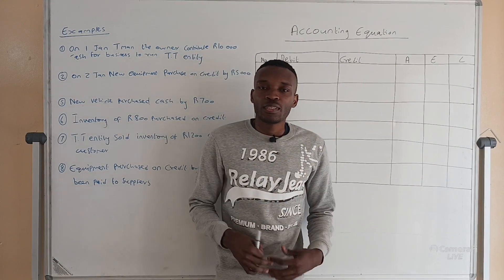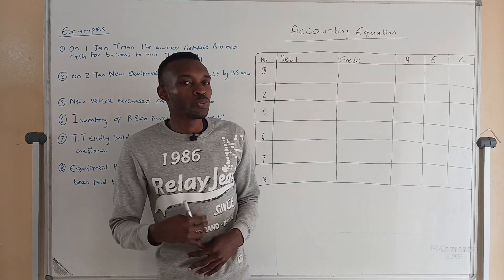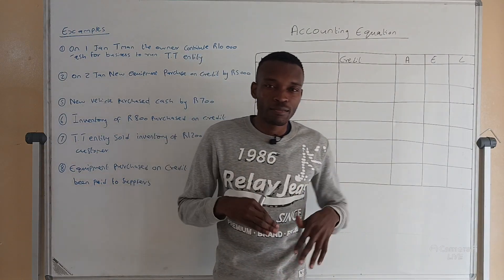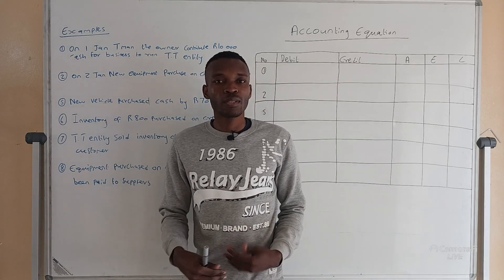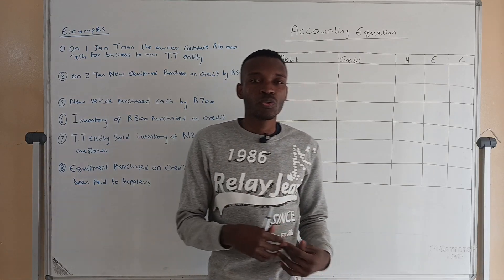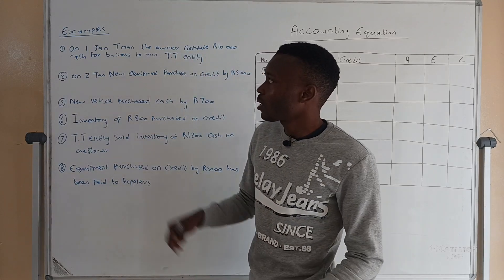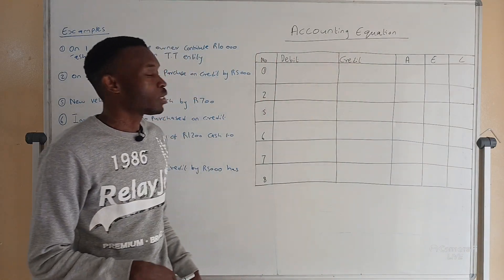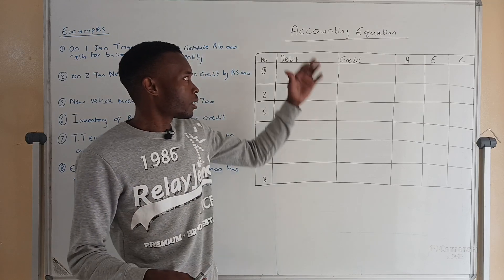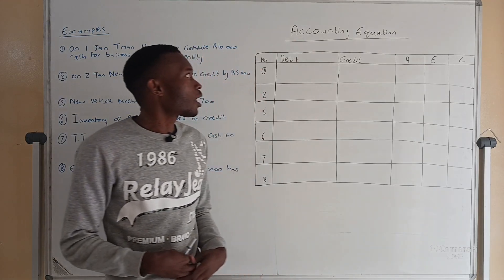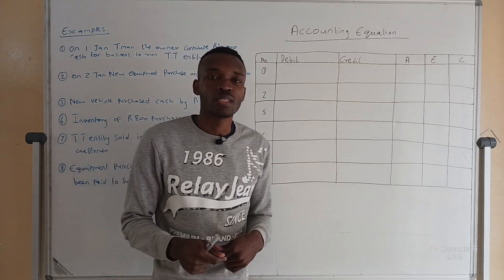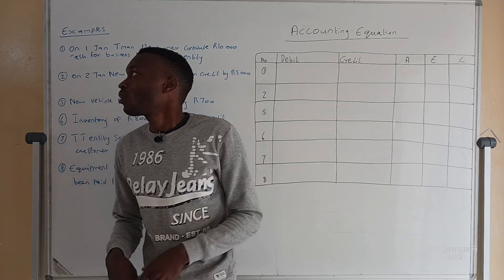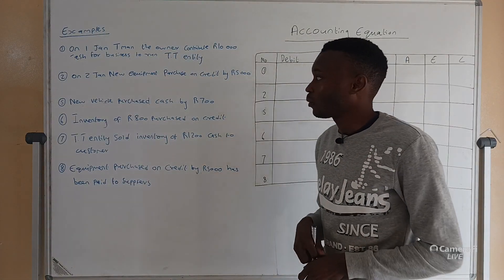Hi Grade 9, so in today's video we are going to continue with our lesson on the accounting equation. Please make sure that you watch the entire video so that you will understand a better principle than the previous one we introduced in part one. Here we have our example that we are going to do, and this is the table that we are going to fill. We have a different kind of table that you can be given to draft out the accounting equation, so please make sure that you know all of them. However, the principles that apply behind them are still the same.